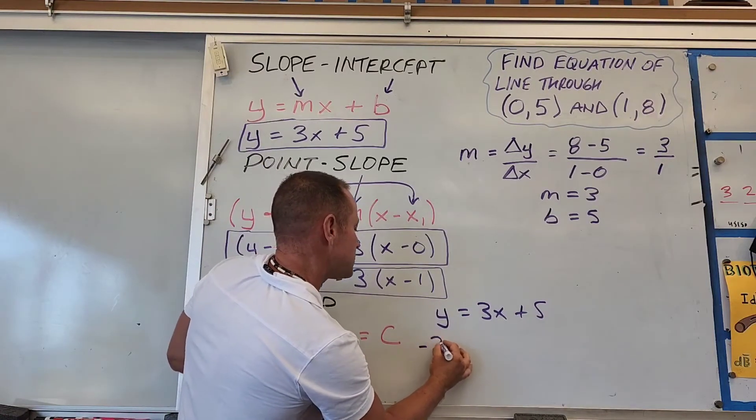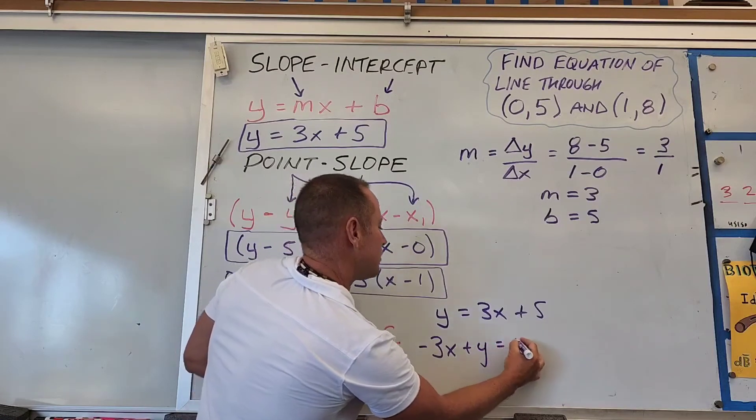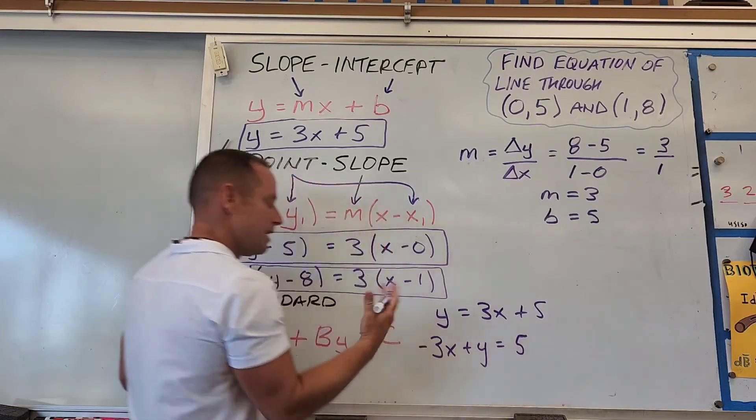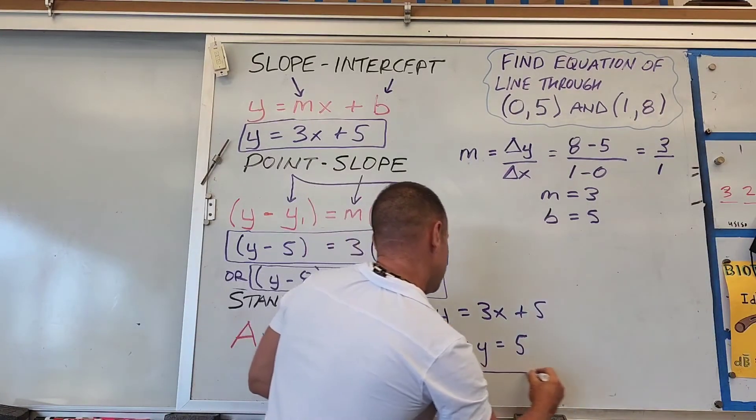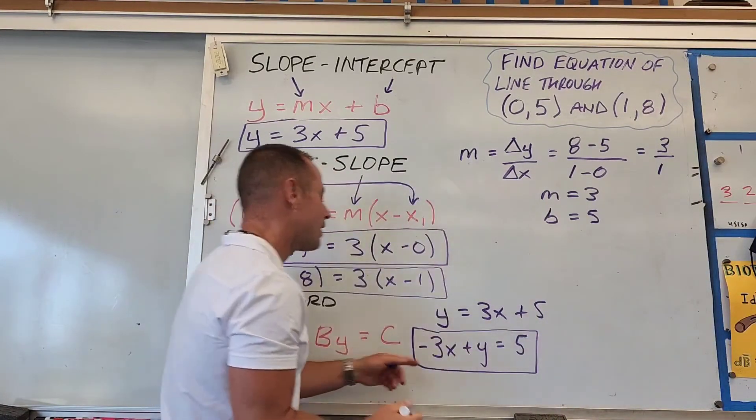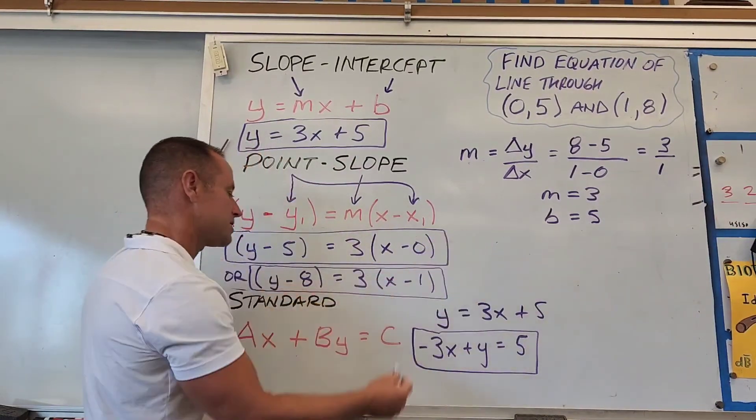You get -3x plus y equals 5, and you could leave it like that. That's one possible answer. Or you could multiply both sides by -1.